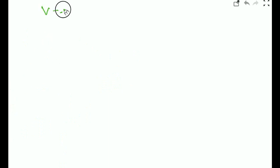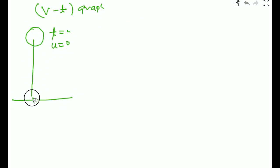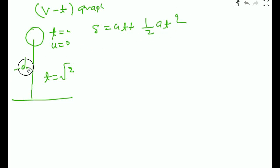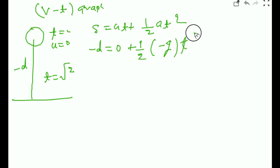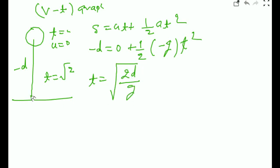Now for the velocity-time graph: at t=0, velocity is 0. Using s = ut + ½at², with s = −d, u=0, and a = −g, we get t = √(2d/g). So at time √(2d/g) the ball reaches the ground. At that moment, the velocity is −√(2gd).